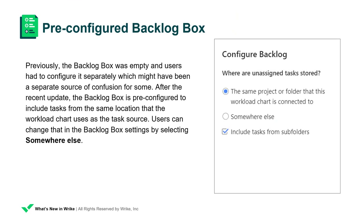Default backlog box logic has changed. Previously, the backlog box was empty and users had to configure it separately, which might have been a source of confusion for some. After the recent update, the backlog box is pre-configured to include tasks from the same location that the workload chart uses as the task source. Users can change that in the backlog box settings by selecting Somewhere Else.